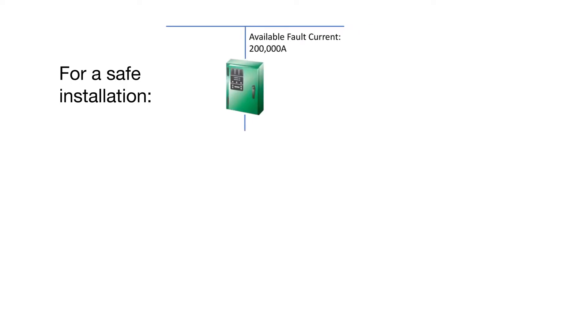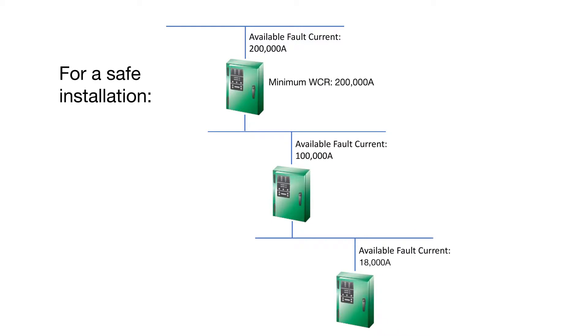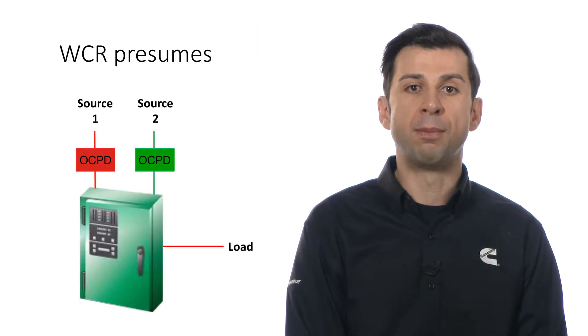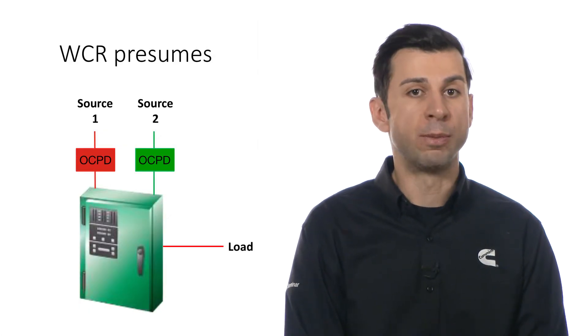UL1008 defines the performance criteria for the WCR. The WCR defines a level of fault current which the transfer switch can withstand and close without creating a hazardous condition. For a safe installation, the WCR of the transfer switch must be higher than the available fault current at the point in the circuit where the transfer switch is installed. The WCR presumes that the transfer switch is protected by an over-current device on both sources.